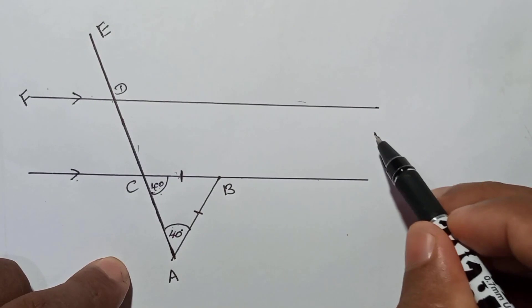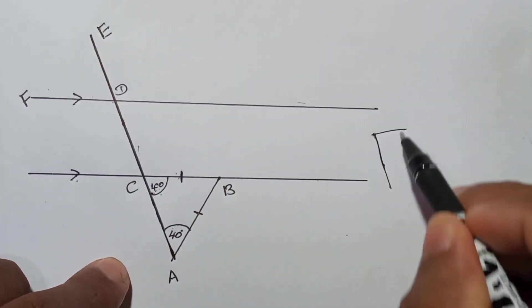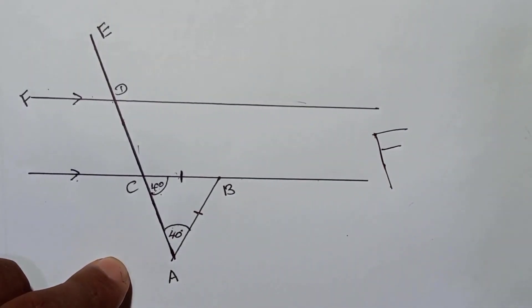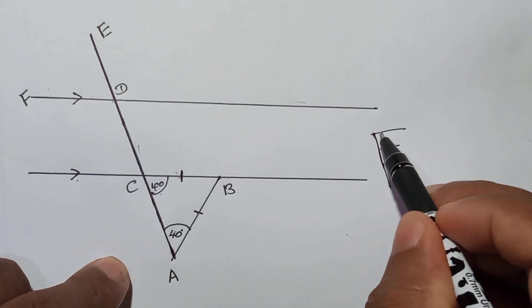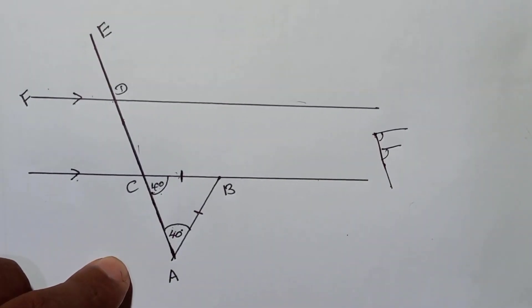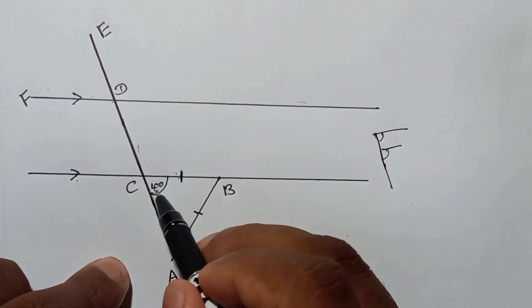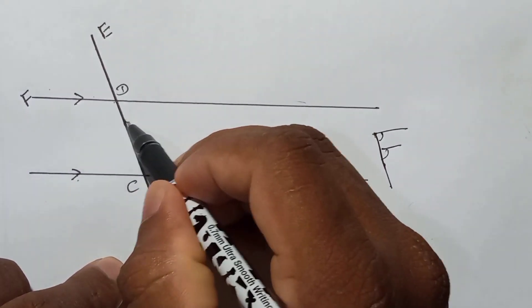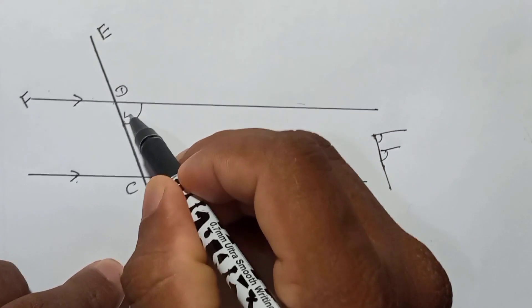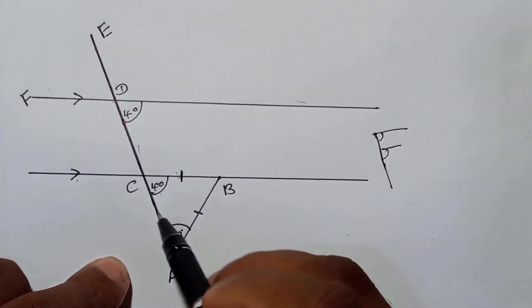It's like this way: this angle and this angle are corresponding angles, so that's why if this is 40, this also must be 40. Try to understand now this angle.